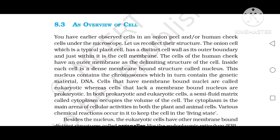Cells that have membrane-bound nuclei are called eukaryotic, whereas cells that lack a membrane-bound nucleus are prokaryotic. In both prokaryotic and eukaryotic cells, a semi-fluid matrix called cytoplasm occupies the volume of the cell. The cytoplasm is the main arena of cellular activities in both plants and animal cells, and various chemical reactions occur in it to keep the cell in the living state.